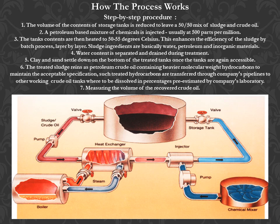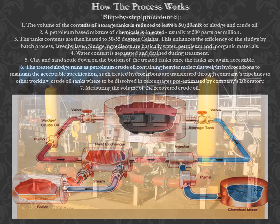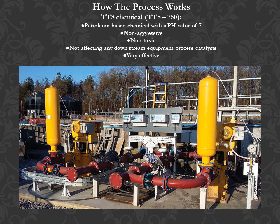Step 7: Measuring the volume of the recovered crude oil. TTS-750 chemical: petroleum-based chemical with pH value of 7, non-aggressive, non-toxic, and not affecting any downstream equipment or process catalysts. Very effective.